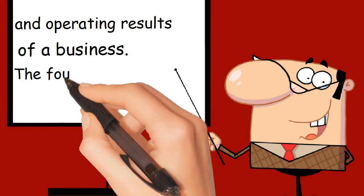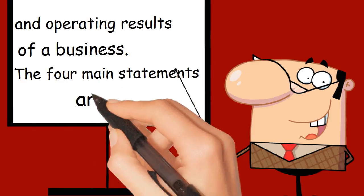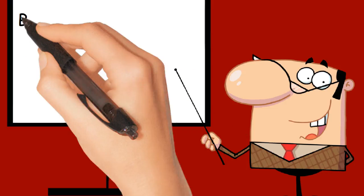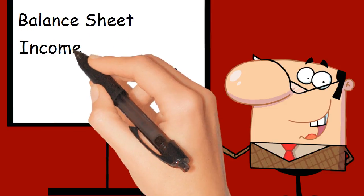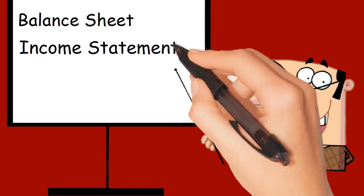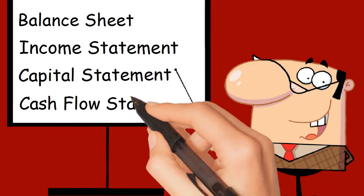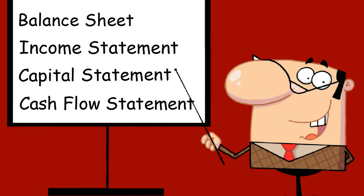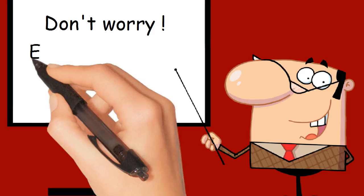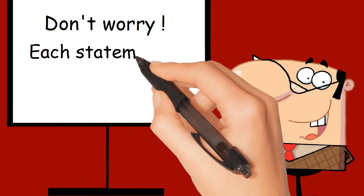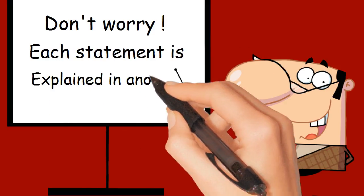The four main statements are: balance sheet, income statement, capital statement, and cash flow statement. Don't worry — each statement is explained in another video.